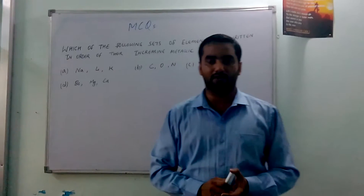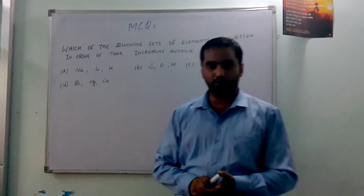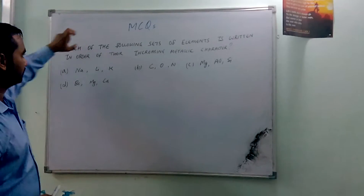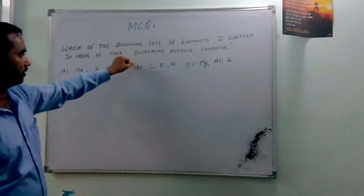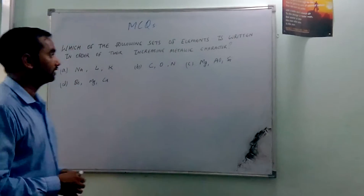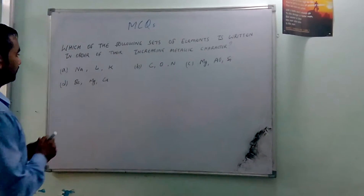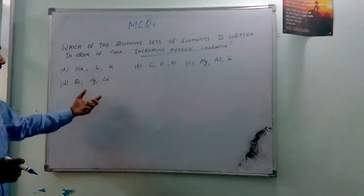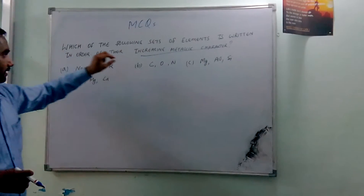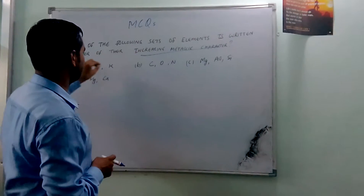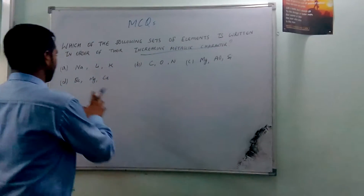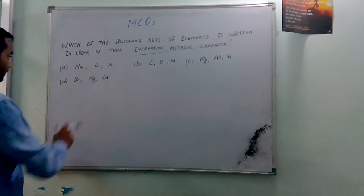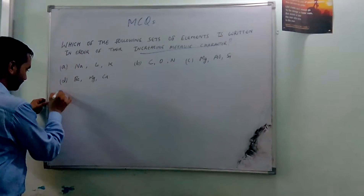Hello friends, welcome to chemistry tutorial. Moving to our next question in the series of multiple choice questions from periodic table. The question is: which of the following sets of elements is written in order of their increasing metallic character? The question demands selecting the set of elements which shows they are arranged in increasing metallic character from first to last. The options include sodium, lithium, potassium, and others.